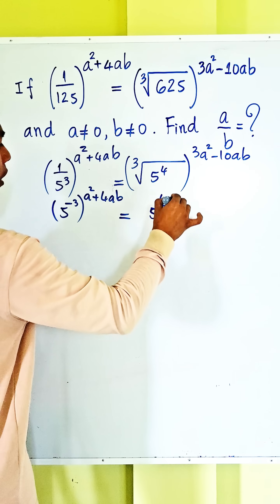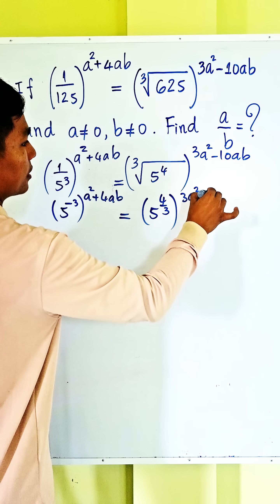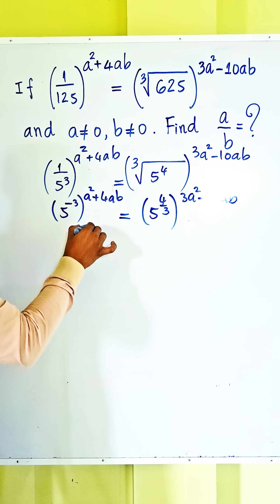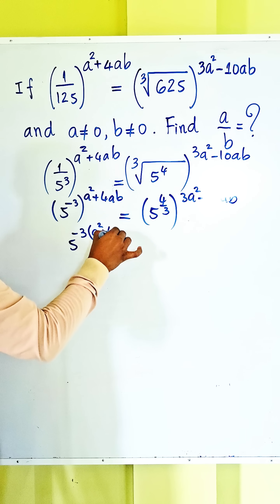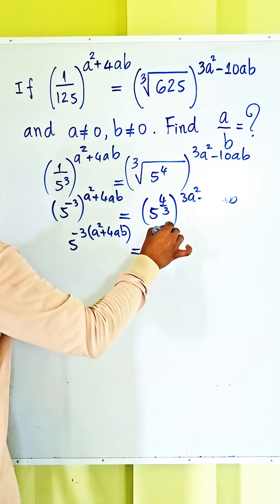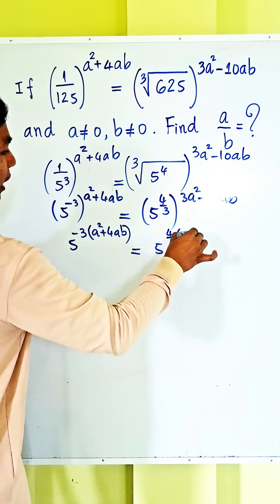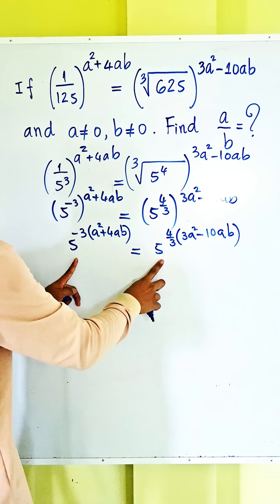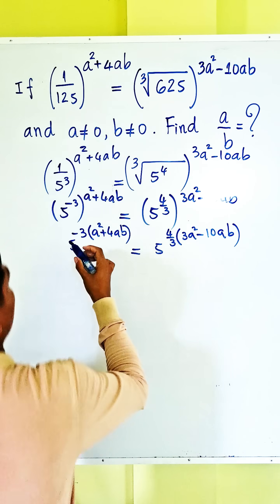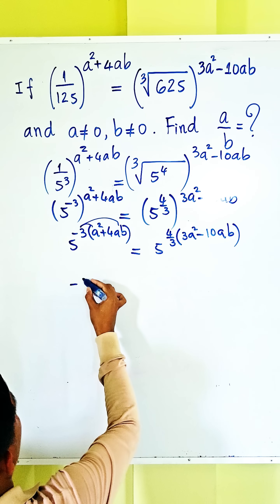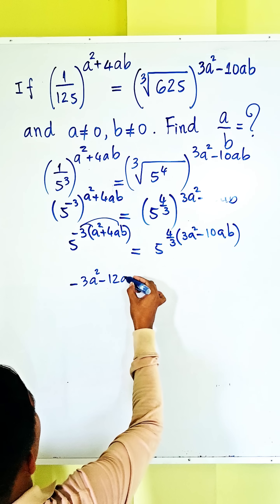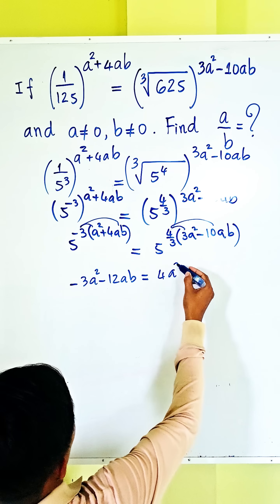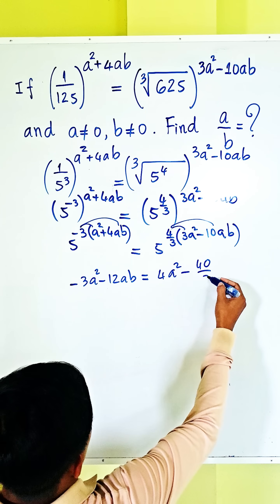This gives us 5 to the power negative 3 times (a squared plus 4ab) equals 5 to the power 4/3 times (3a squared minus 10ab). Since the bases are the same, we equate the exponents and expand to get: negative 3a squared minus 12ab equals 4a squared minus (4/3)ab.